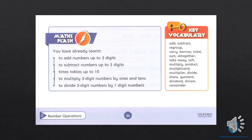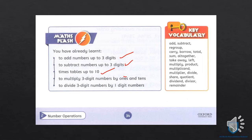In math class, we have already learned how to add three-digit numbers. Three-digit numbers are basically called hundreds. We learned how to add, how to separate numbers, then how to multiply three-digit numbers by 1s and 10s, and how to divide a three-digit number by a one-digit number. Now we will start chapter number 2: Number Operations.